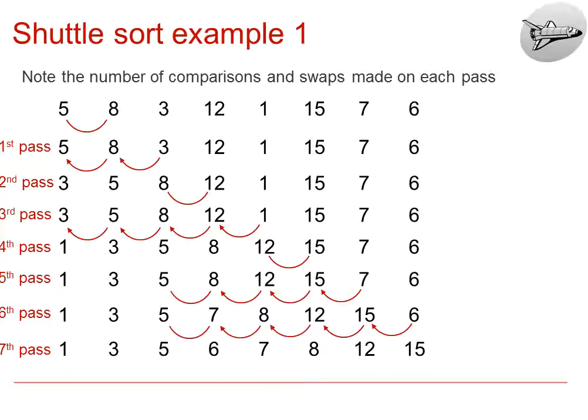The second pass, we compare the 3 and the 8, where we will have a swap, and then the 3 and the 5, where again they will be a swap. You can see that at the end of the second pass, the list becomes 3, 5, 8, and then the other numbers.